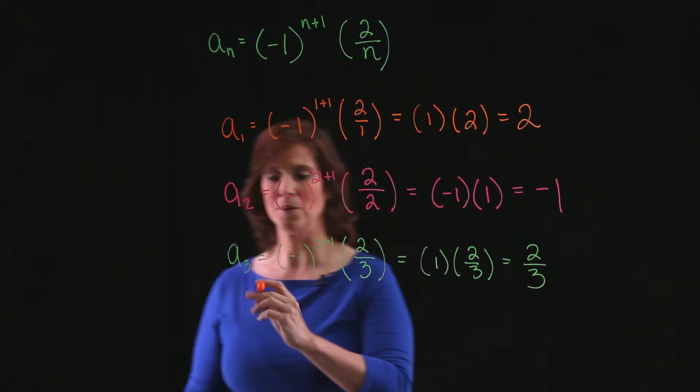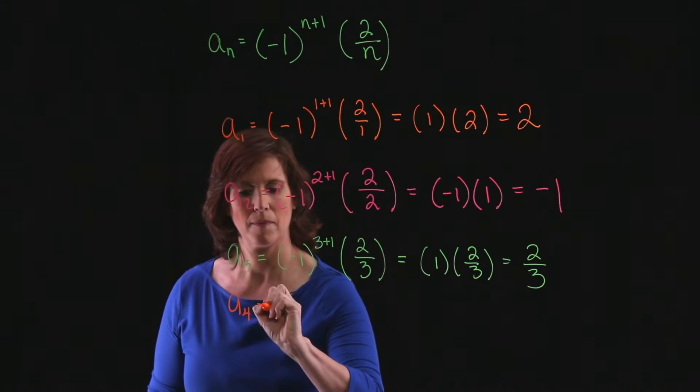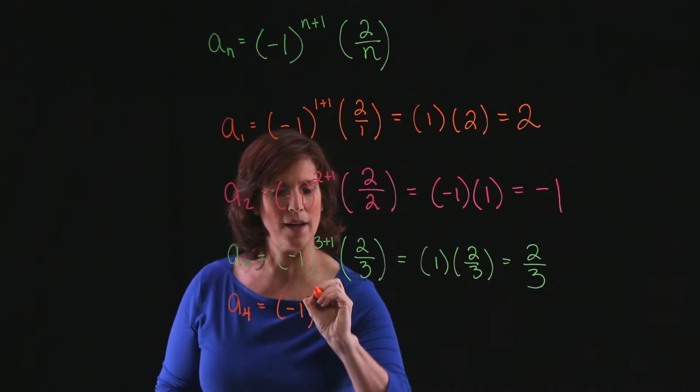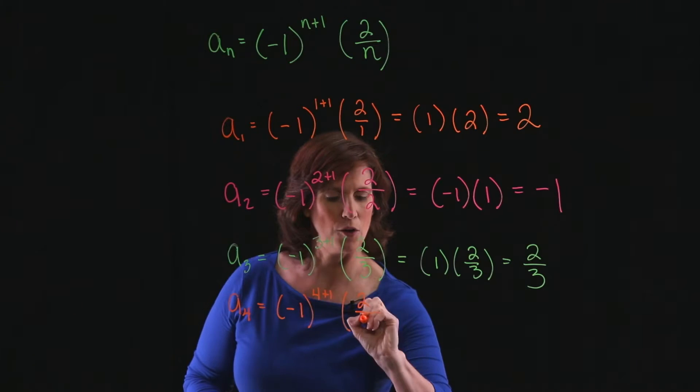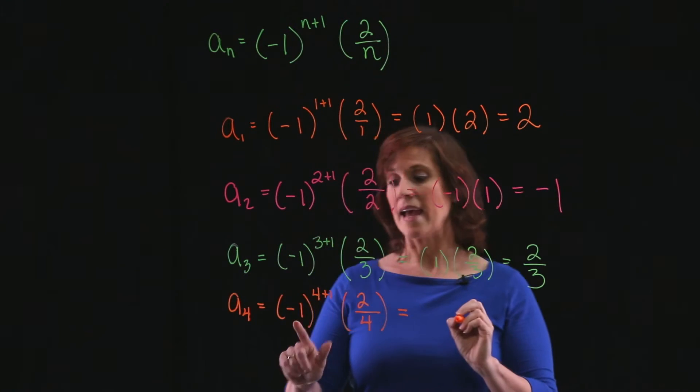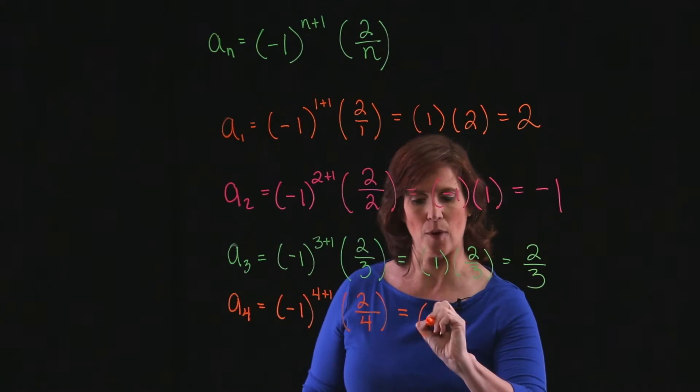The fourth term is minus 1 to the 4 plus 1 times 2 all over 4. Negative 1 to the fifth power is negative 1.